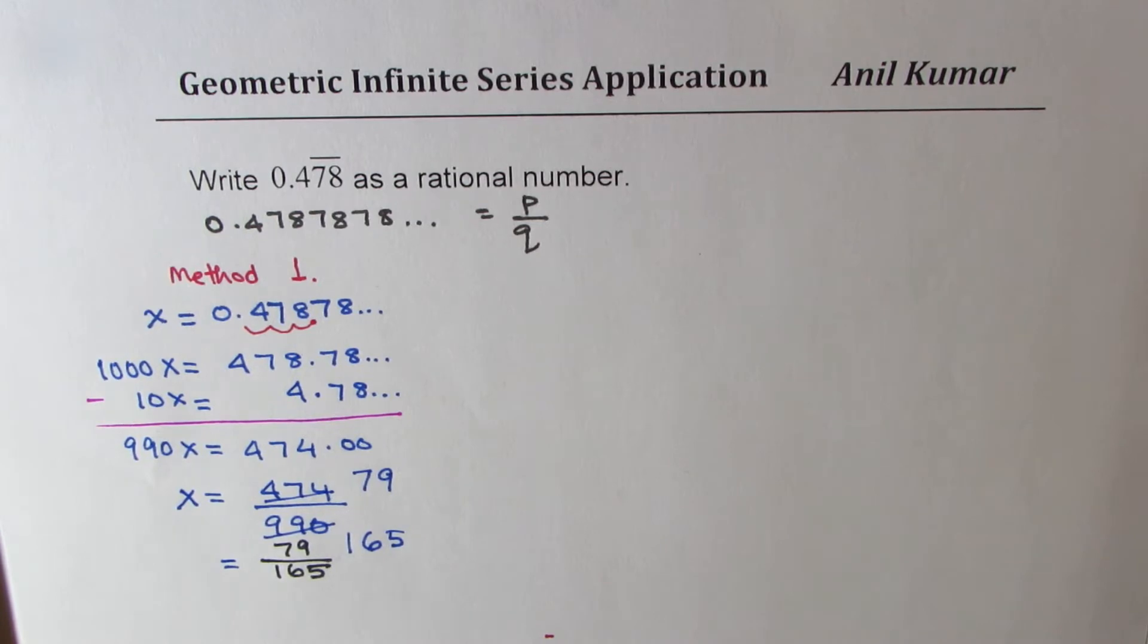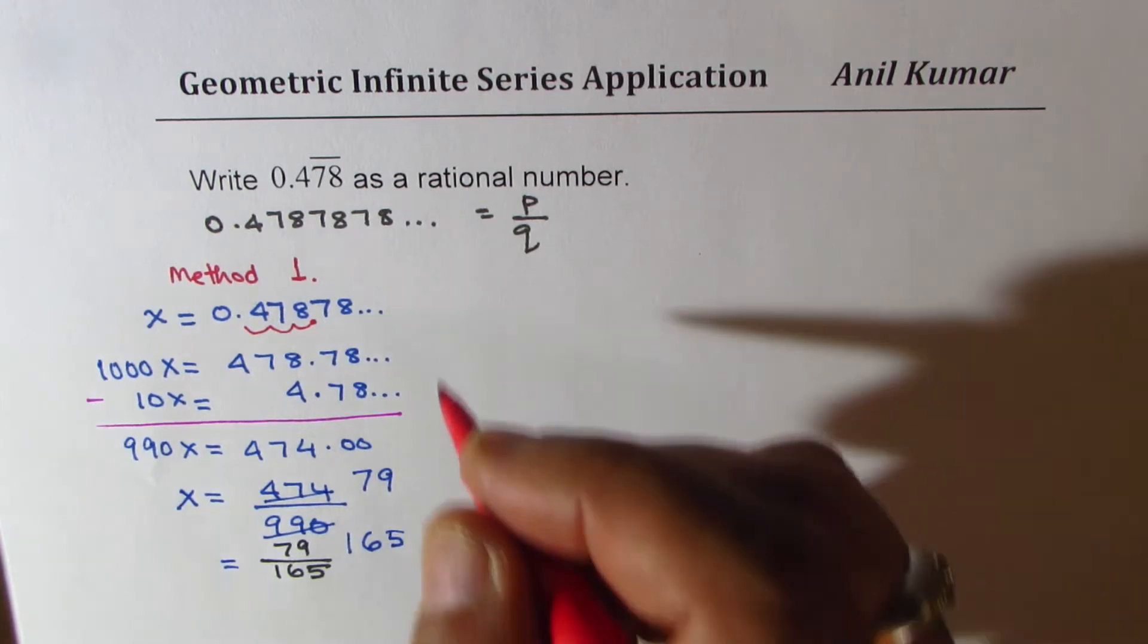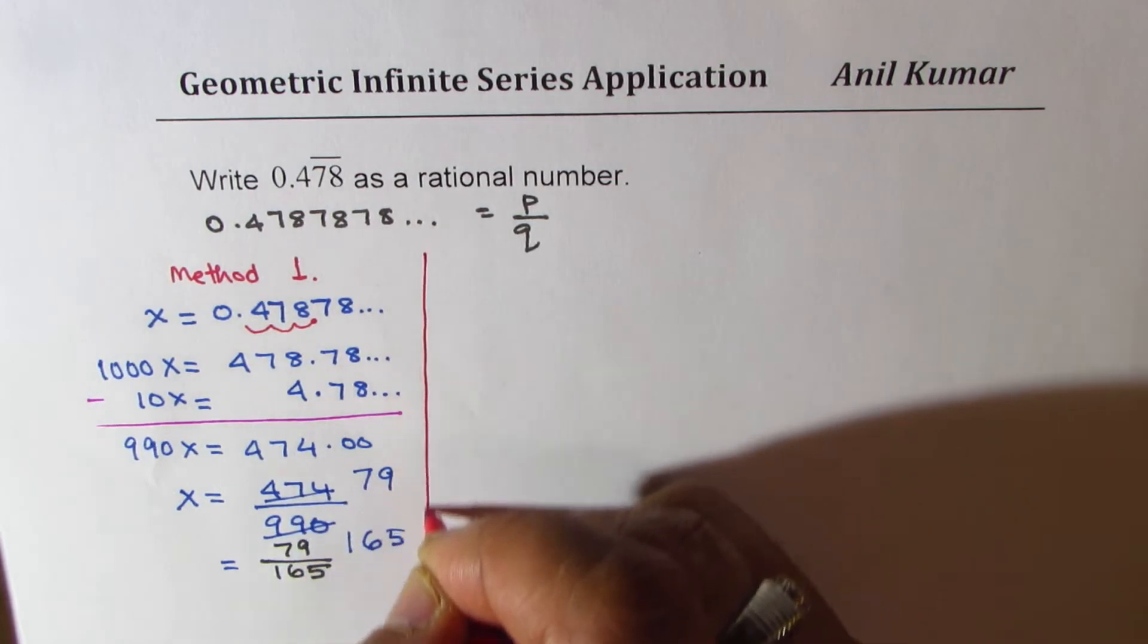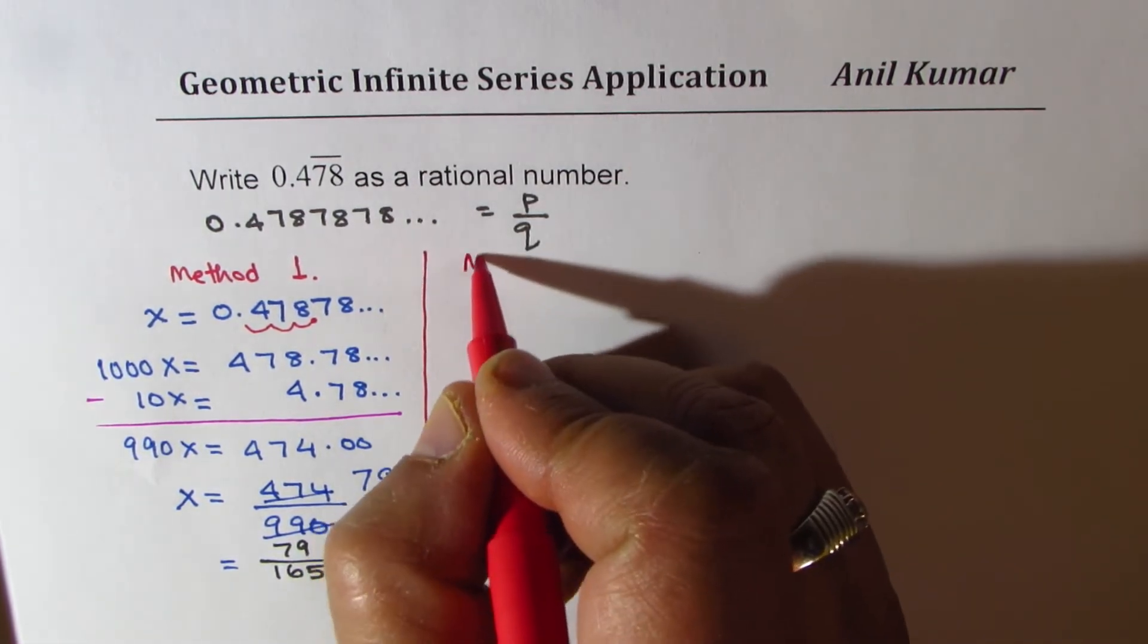That is the rational number which represents the recurring or repeating decimal number. Is that clear? So we got one method right there. Now we will do method 2.